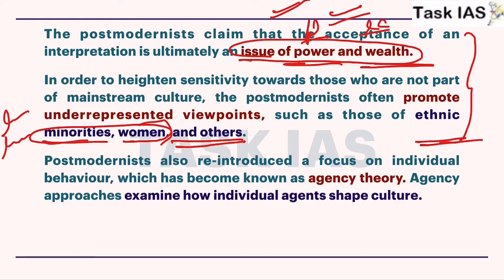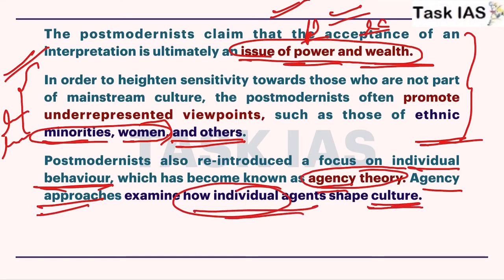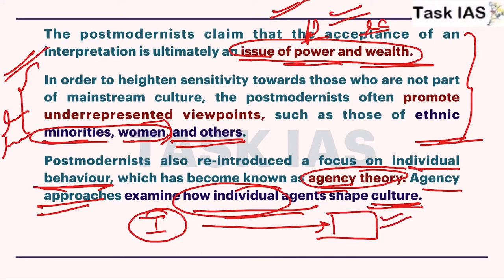These vulnerable or underrepresented groups lack economic wealth and political power to influence literary sources. Post-modernists tried to give space to these so-called backward people in their literary sources, and this approach is also known as agency theory, which focuses on individual behavior and thinking - explaining how an individual agent shapes the culture of a particular society.